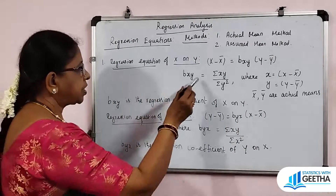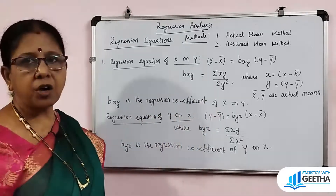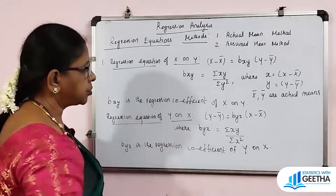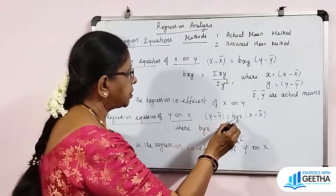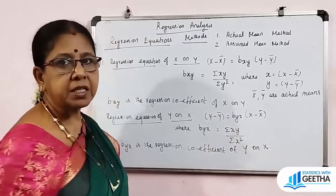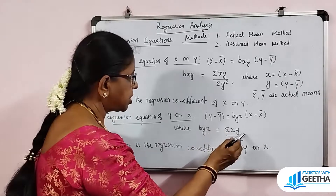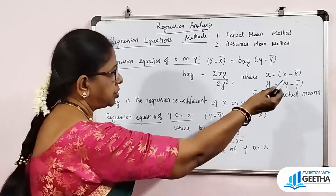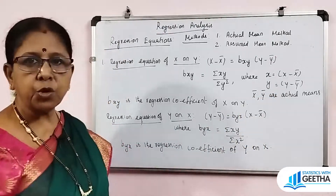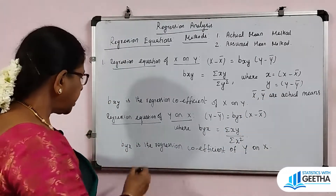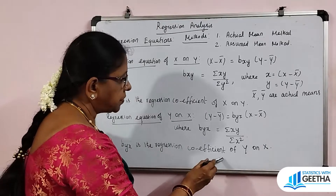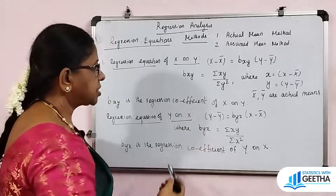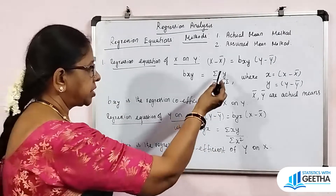bxy is the regression coefficient of x on y. Similarly, the regression equation of y on x is: y minus y-bar equals byx times (x minus x-bar). byx is given by summation of small xy divided by summation of small x squared. byx is the regression coefficient of y on x. So if we know the two regression coefficients, we have two regression equations.